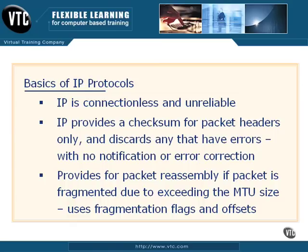IP also provides for packet reassembly if a packet is fragmented. When the sending and receiving computers are communicating, there is a maximum transmission unit (MTU) size established that both can handle. If a packet exceeds that MTU size, IP will fragment that packet into smaller units and use fragmentation flags to signal that this is the beginning of a fragmented packet. It will use offsets to determine the order in which packets need to be reassembled on the receiving end.